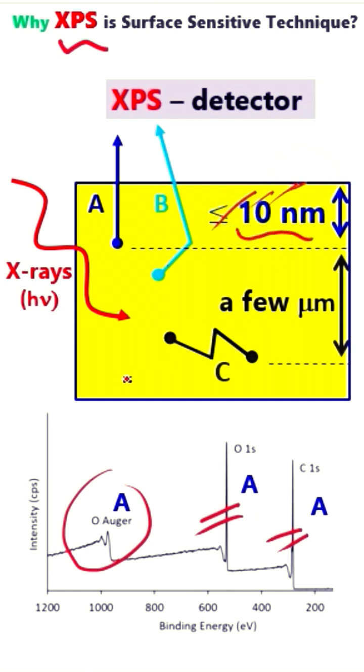The question is, why do the photoelectrons not emit from this thicker region in the micrometer thick regions? The answer is very simple.